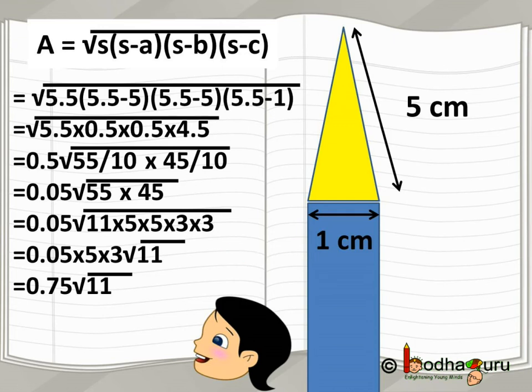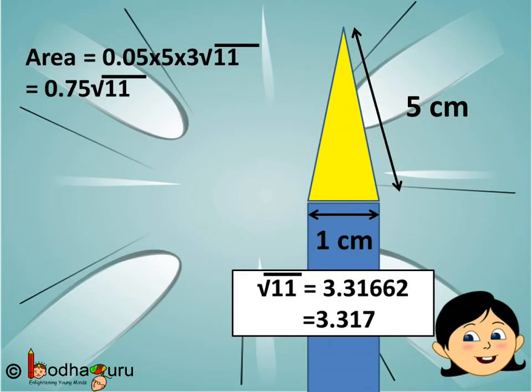So, this is equal to 0.75 square root of 11. We know that square root of 11 is not a perfect square number, so we just find the square root value till 3 to 4 decimal places.